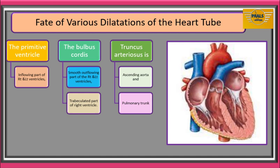Regarding the fate of the dilatations: the right horn and body of the sinus venosus will be absorbed into the primitive atrium to form the smooth part of the right atrium. The left horn of the sinus venosus will form part of the coronary sinus that opens into the smooth part of the right atrium. The primitive atrium will be partitioned to form the rough part of both the right and left atria.